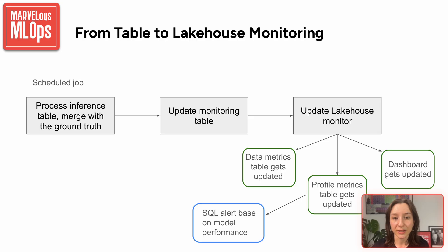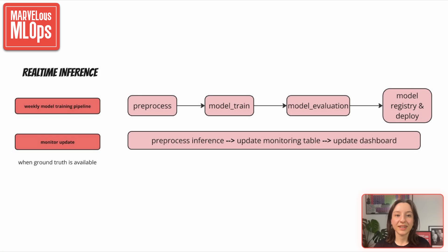Here is an example for real-time inference. The model is retrained weekly, and the updated model is deployed to the serving endpoint. Separately, when ground-truth labels arrive, a workflow updates the monitoring table used by Lakehouse Monitoring. These are two distinct workflows — one for training and deployment, another for monitoring — each running on a different schedule. This separation allows for modularity and scalability, especially in production environments.